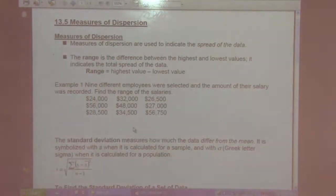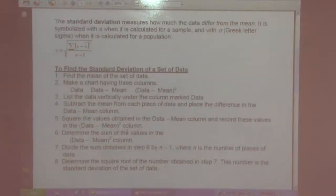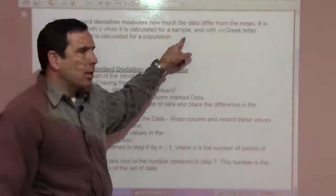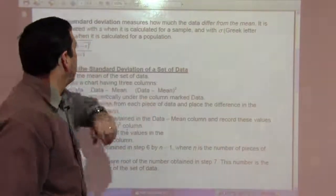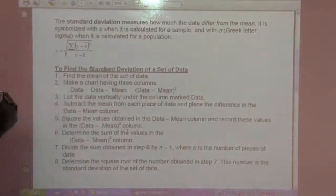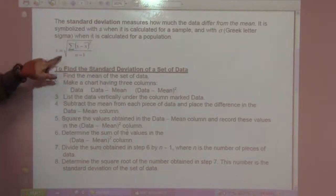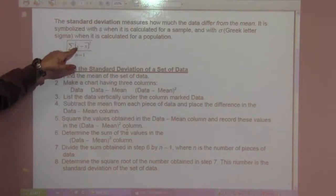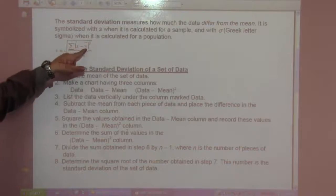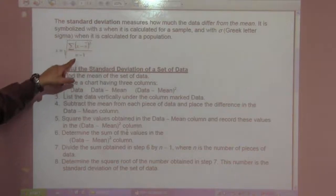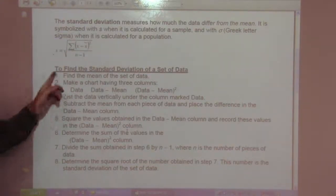Standard deviation is the measure of how much the data differ from the mean. It is symbolized with s when you're talking about a sample, whereas it's the lowercase sigma whenever it is the whole population. So s equals the square root of the sum of (x minus x̄)² over n minus 1. To find the standard deviation, find the mean of the data.